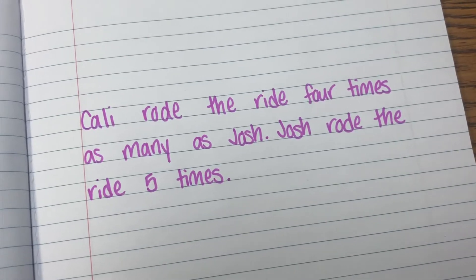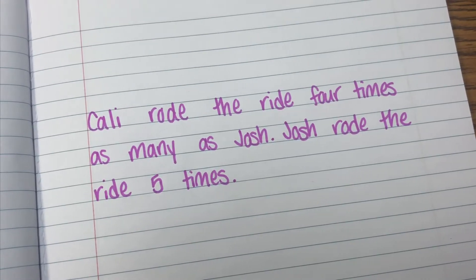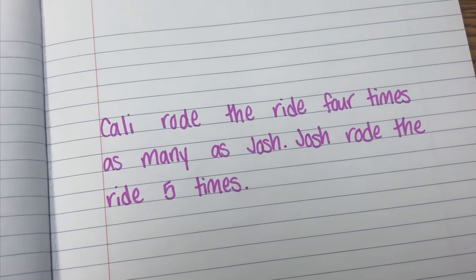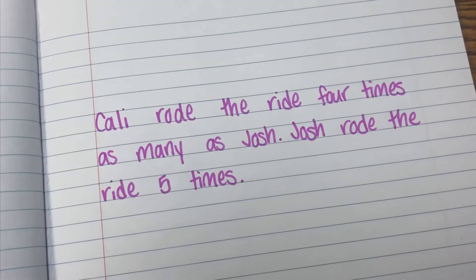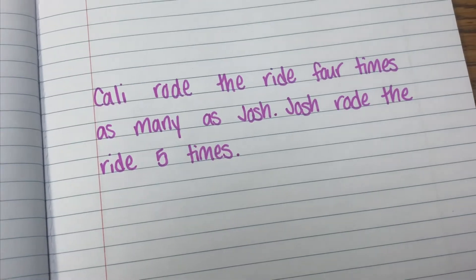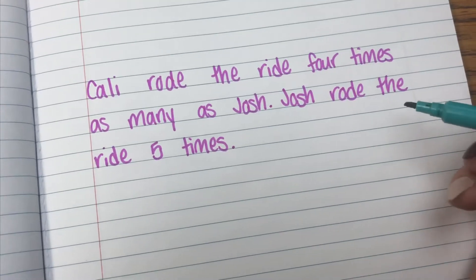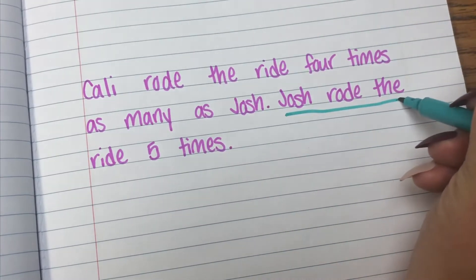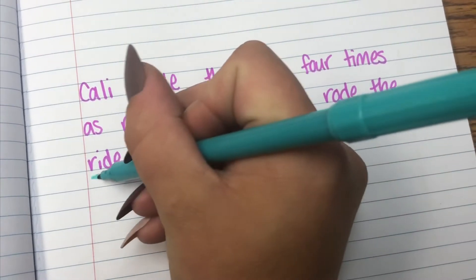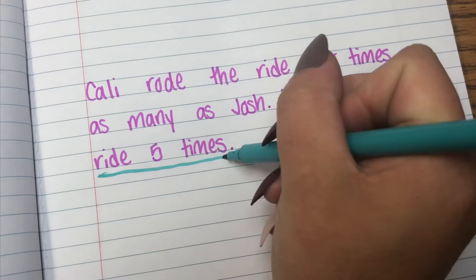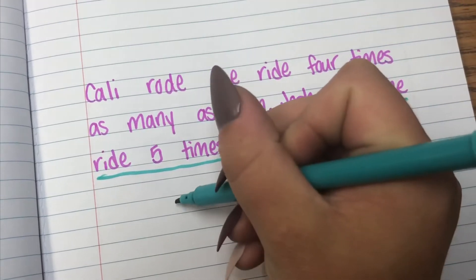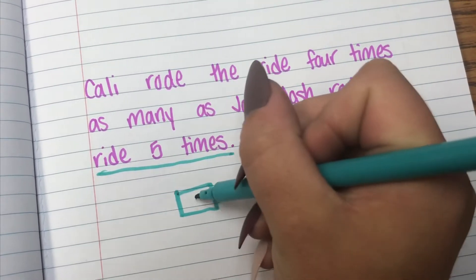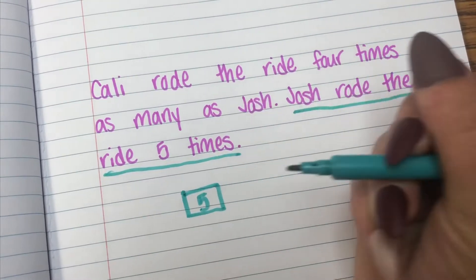Here's another example: Cali rode the ride four times as many times as Josh. Josh rode the ride five times — we're going to underline that and put the five in a box.